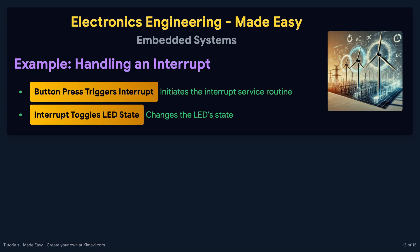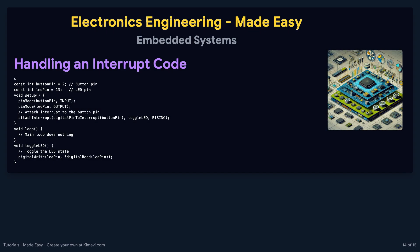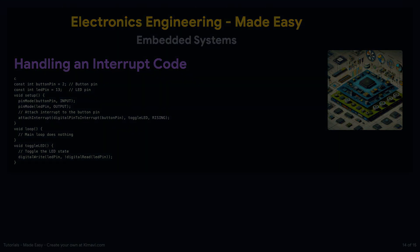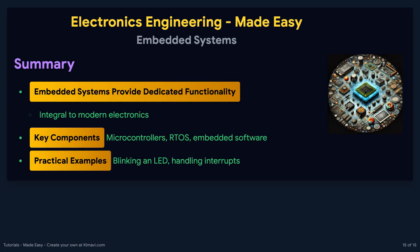Consider an embedded system where a button press triggers an interrupt to toggle an LED. This is a common example of handling an interrupt in embedded systems. Here is the code: we define the button and LED pins, set up the pin modes, and attach an interrupt to the button pin. The interrupt service routine toggles the LED state whenever the button is pressed.